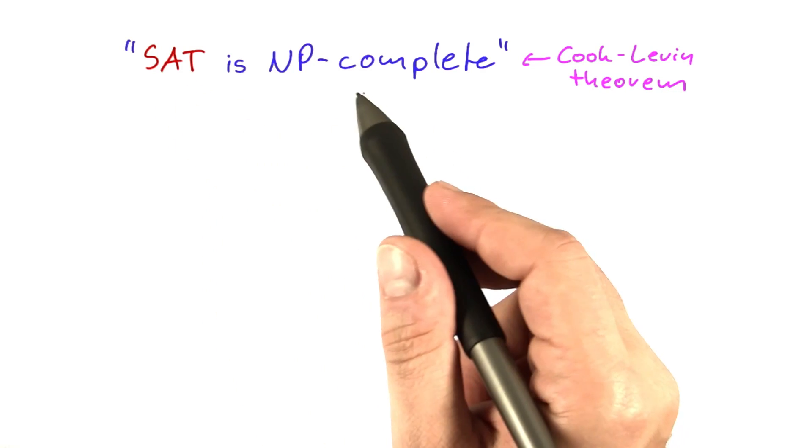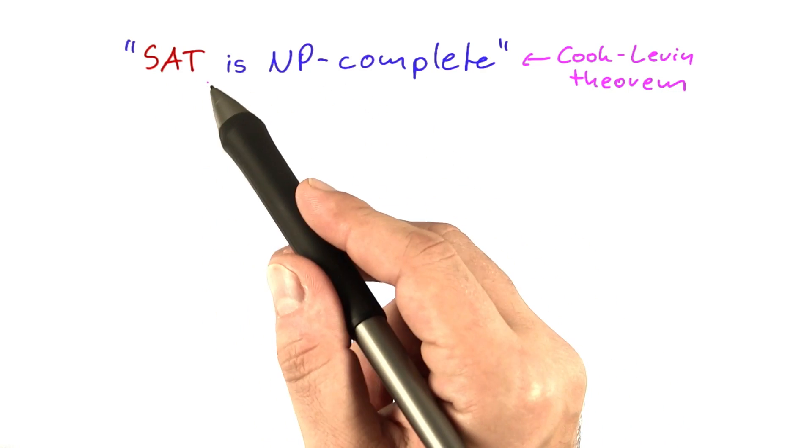So now that you know what the SAT problem is, how do we actually show that SAT is NP complete?